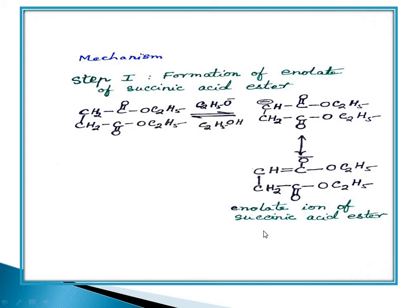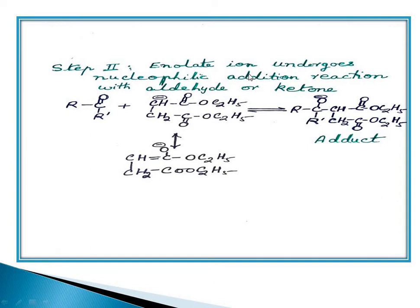Step 2 — Nucleophilic addition: The enolate ion undergoes a nucleophilic addition reaction with the aldehyde/ketone (C=O). The electron pair shifts upward (electrometric shift), giving positive charge on carbon and negative on oxygen. The carbanion (CH⁻) attacks the electrophilic carbon of the carbonyl, forming an adduct — similar to what we see in aldol condensation.